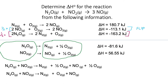Now comparing: we have N2O and NO2, which we want. But we have N2 and O2 that we don't want and need to get rid of. We also have only one NO, but we want that to be three NOs.